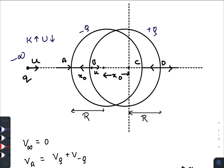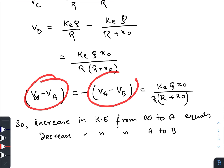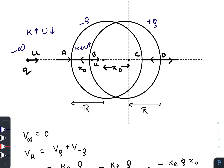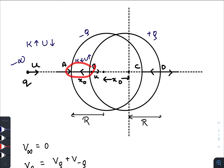When the particle crosses point A and reaches point B, there is a decrease in kinetic energy and increase in potential energy. Since the potential energy decrease from minus infinity to A equals the potential energy increase from A to B, there is no net change in kinetic energy. The particle comes out from point B with the same initial speed u. So the particle will never stop in the region from minus infinity to B regardless of the speed u.